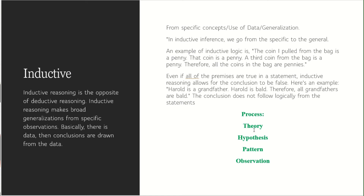The process is: theory → hypothesis → pattern → observation. The observation can be logical or it can be false. In simple words, inductive reasoning goes from a specific concept to a generalization, and the conclusion can be a false or logical statement based on data. Deductive, on the other hand, goes from a simple general concept to a true logical conclusion.